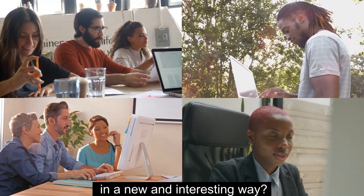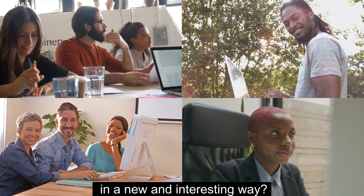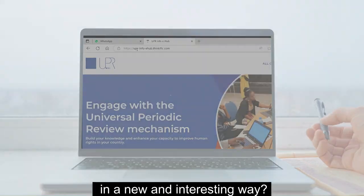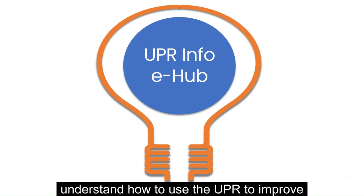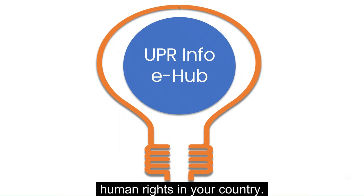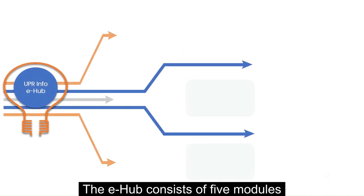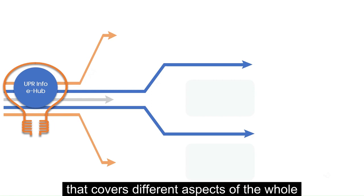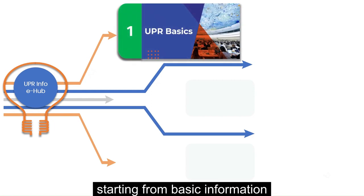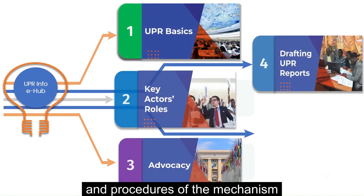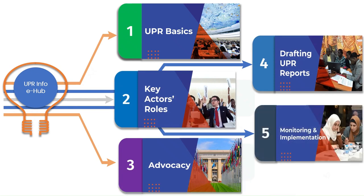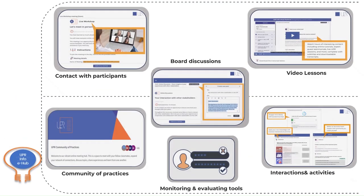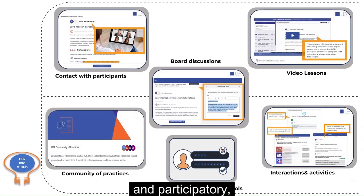Are you ready to learn about the UPR mechanism in a new and interesting way? Introducing UPR Info's eHub, the online platform that will help you understand how to use the UPR to improve human rights in your country. The eHub consists of five modules that cover different aspects of the whole UPR cycle, starting from basic information on the rules and procedures of the mechanism to how you can engage in the process. Each module is interactive and participatory.